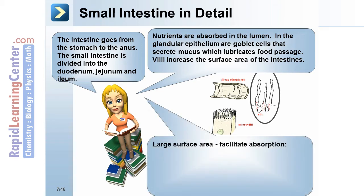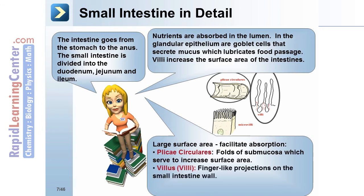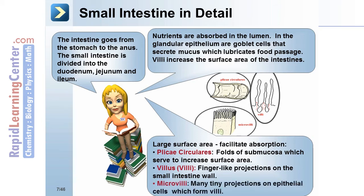Large surface area of the intestine: a large surface area facilitates absorption of nutrients. Plicae circularis are folds of the submucosa which serve to increase surface area. Villi, or villi, are finger-like projections on the small intestine wall. Microvilli are many tiny projections on the epithelial cells which form the villi.